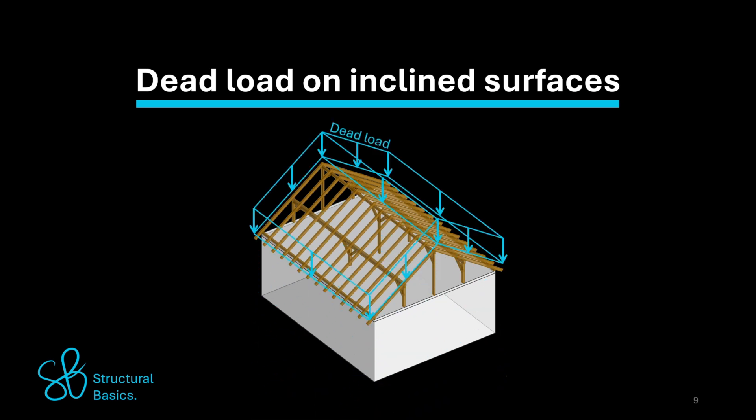We can see that the area dead load is applied on the surface area of the inclined rafter roof. The load direction is the same for 2D sections and line loads.